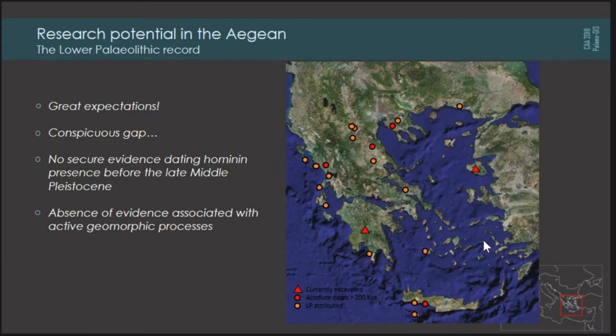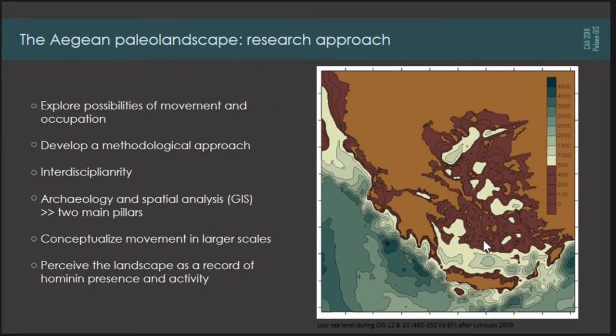However, the lower Paleolithic narrative from this area remained surprisingly poor, and this has been associated with active geomorphic processes transforming the landscape since the Miocene. These same processes have negatively affected the availability, visibility and accessibility of lower and middle Pleistocene archaeological and paleoanthropological material. The aim of my research is dual: first to explore possibilities of movement and occupation of hominids across this paleo-landscape, and secondly to develop methodological tools to unlock information kept in this type of dynamic context — asking questions referring to larger scales and wider landscapes over which movement can be observed and conceptualized.